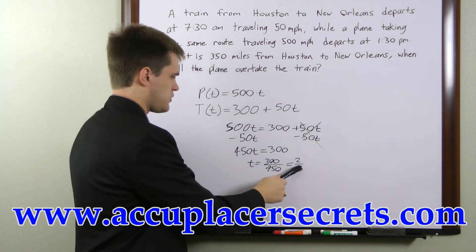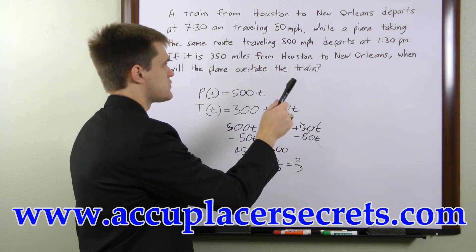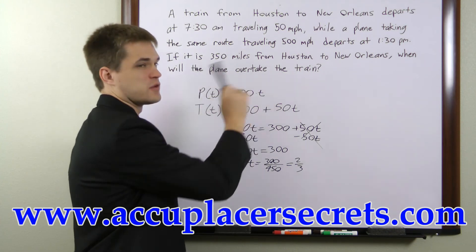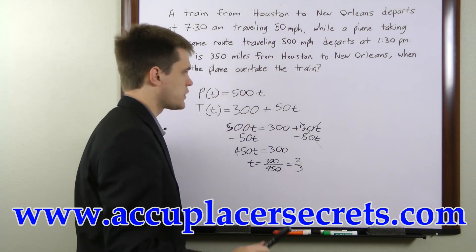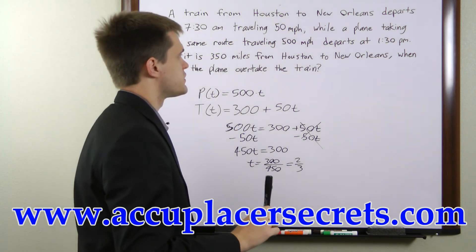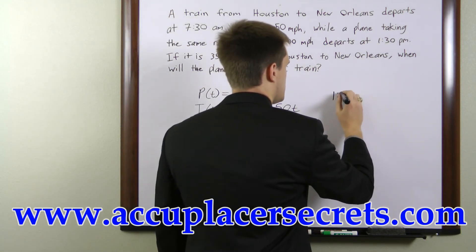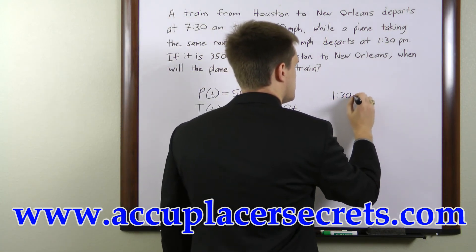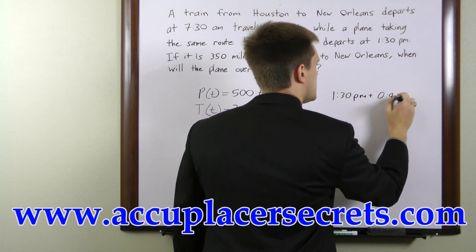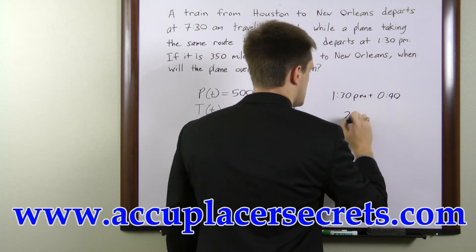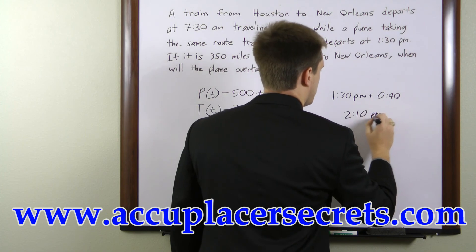Two-thirds of an hour is the time past 1:30 p.m. that it takes for the plane to overtake the train. Two-thirds of an hour is 40 minutes, so we add 40 minutes to 1:30 p.m., which gives us 2:10 p.m.